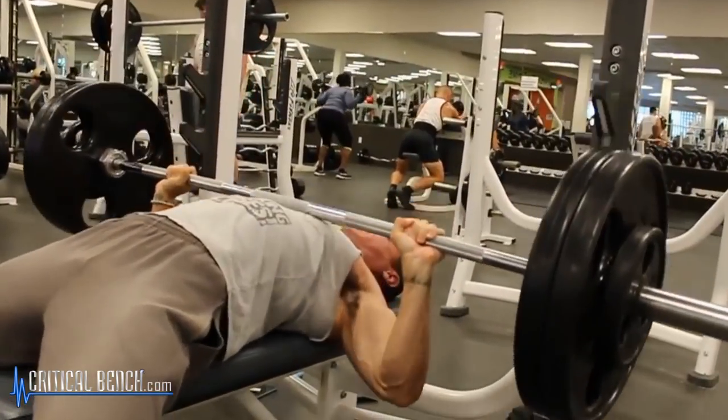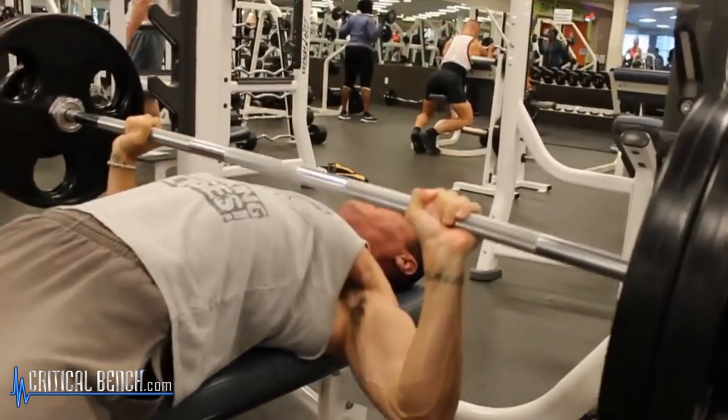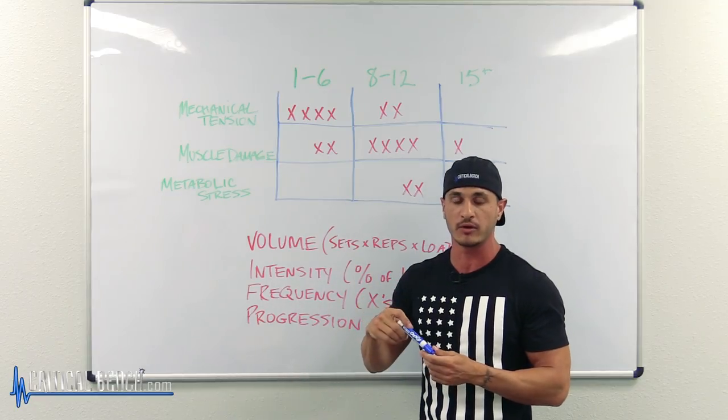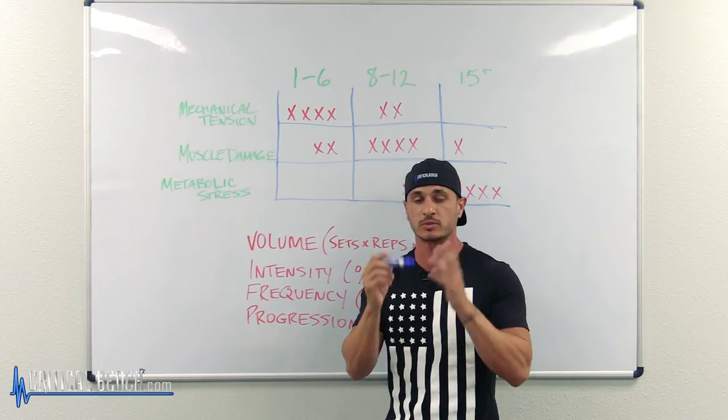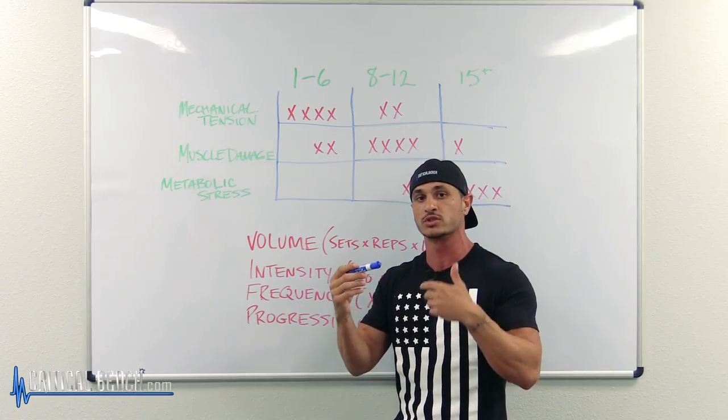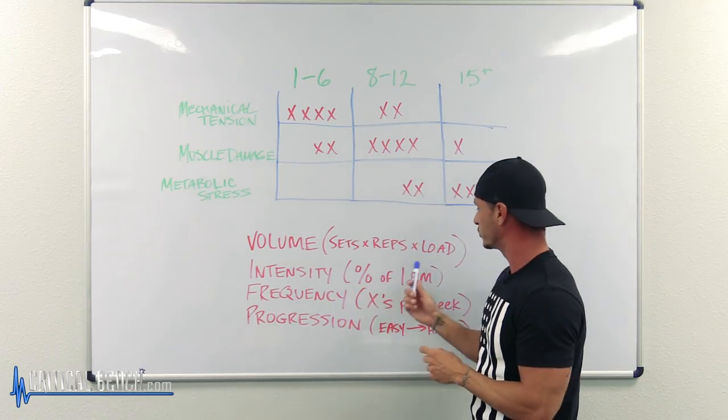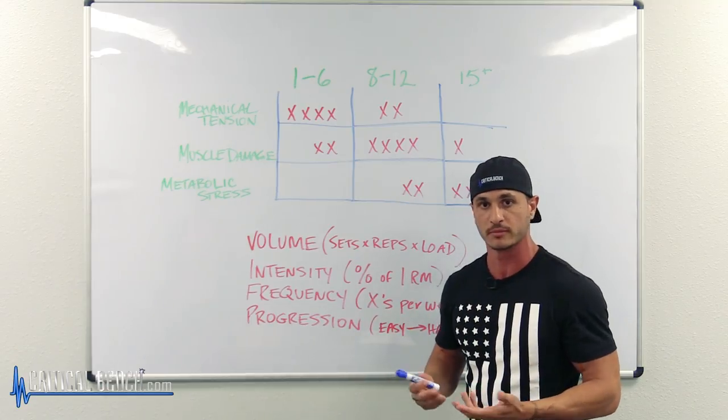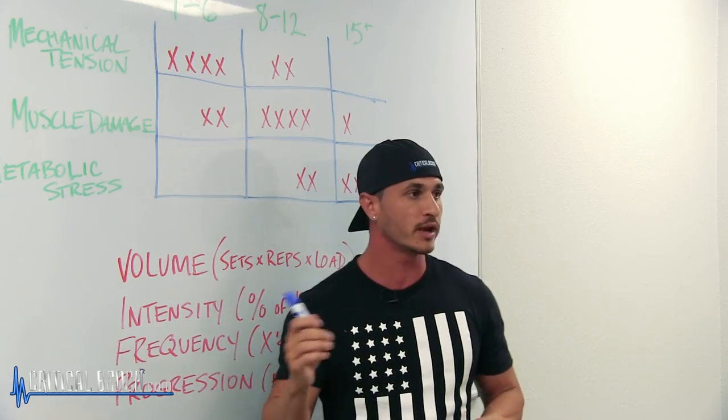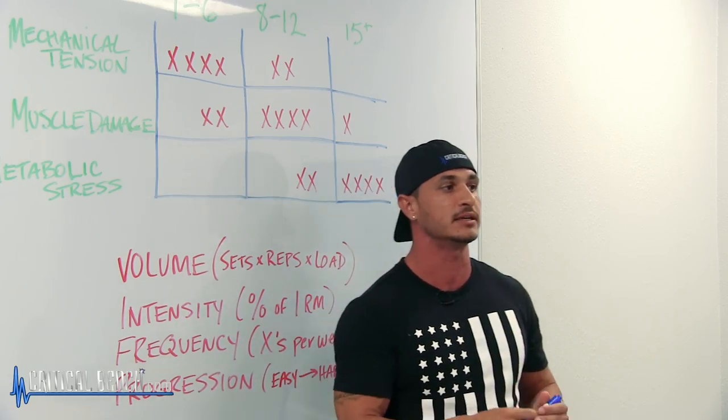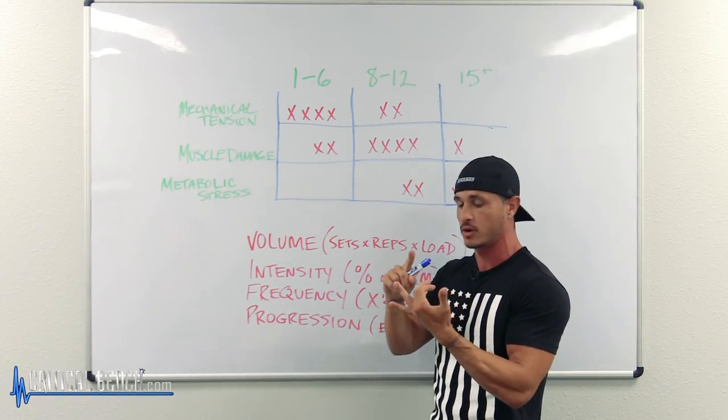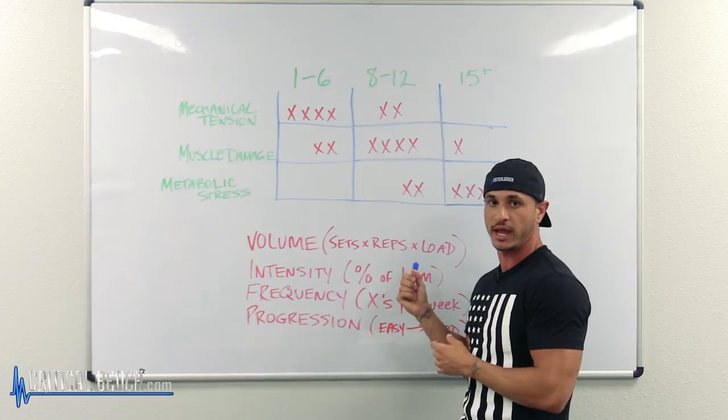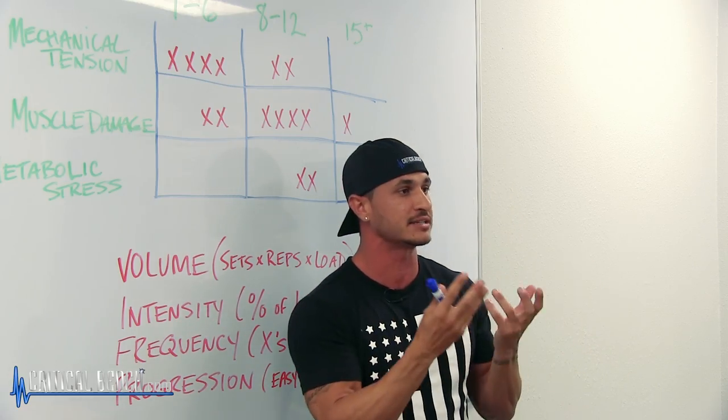Another thing you can do is increase the reps without sacrificing the load or the sets. So for example, if you did 4 sets of 10 with 135 pounds on the bench press, next time around you can do the same 4 sets with the same 135 pounds, but if you are able to do 12 reps instead, you are doing more work and you've gotten stronger. Another way that you can progress is through density.